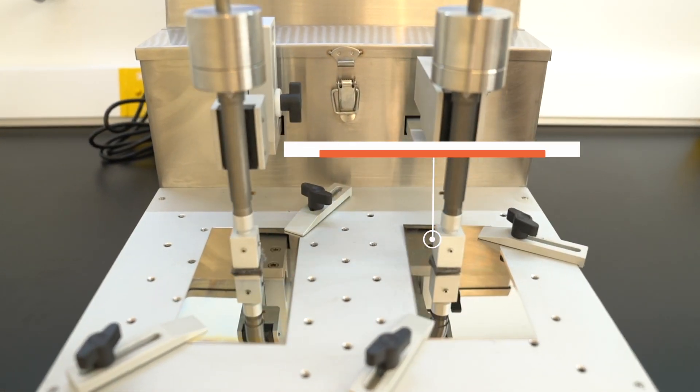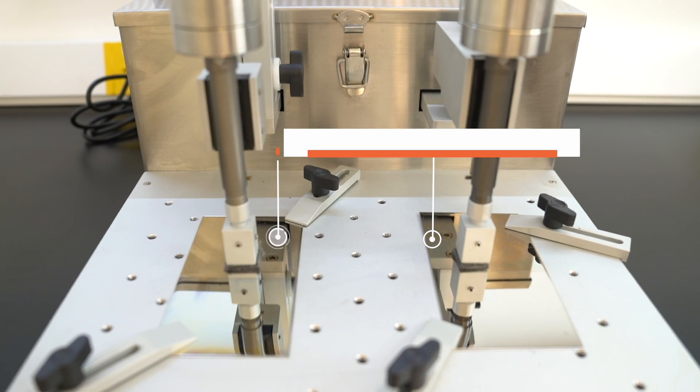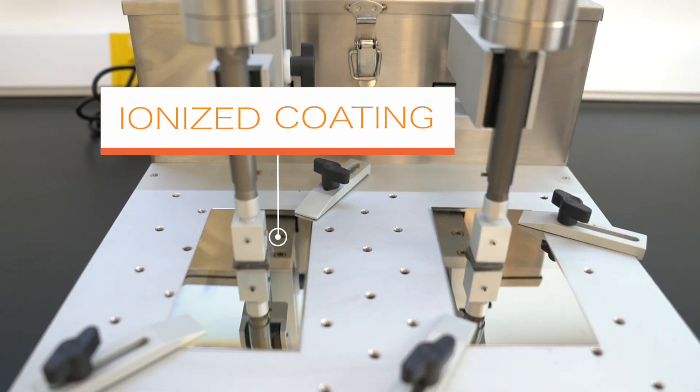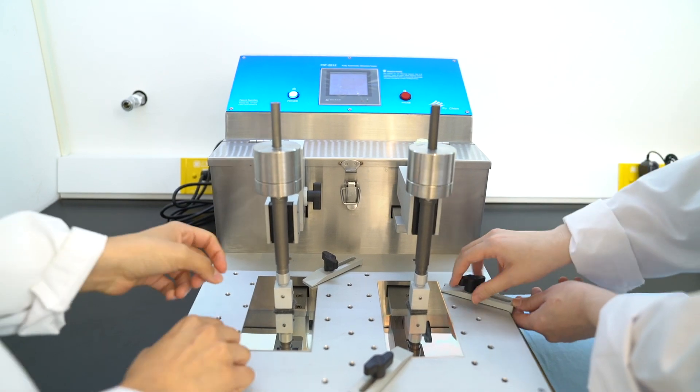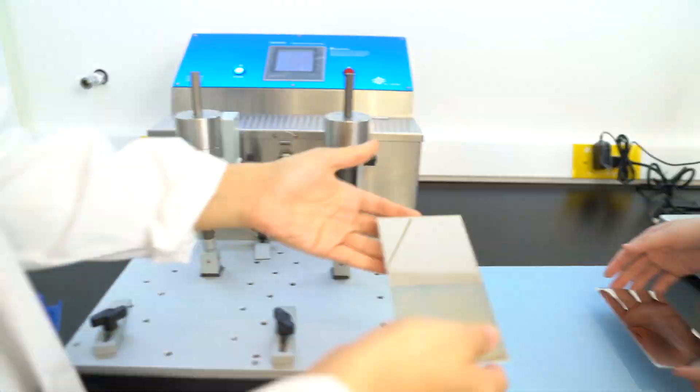We coated half of the right metal plate with 9H coating, and half of the left metal plate is coated with our new unreleased product. We will find out which one can resist 300 strokes of abrasion.